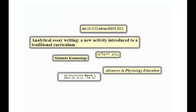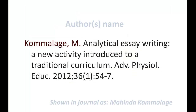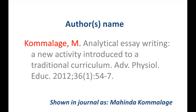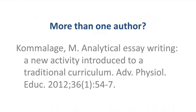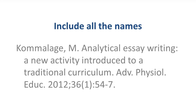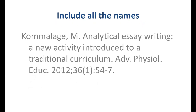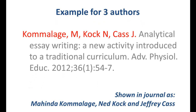Once you've found these details, you'll need to format them in a specific way. For the author of the journal article, use the family name with only the first letter capitalised, comma, initial, followed by a full stop. When you have more than one author, you need to include all of the names. This is an example for three authors. For further assistance, see the library's referencing and citation page.